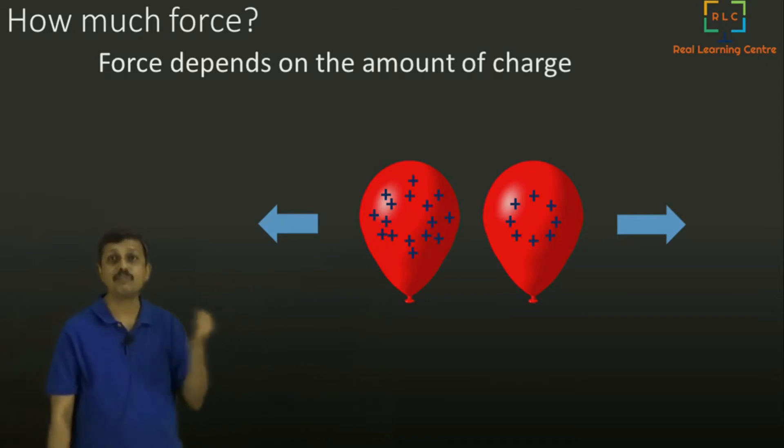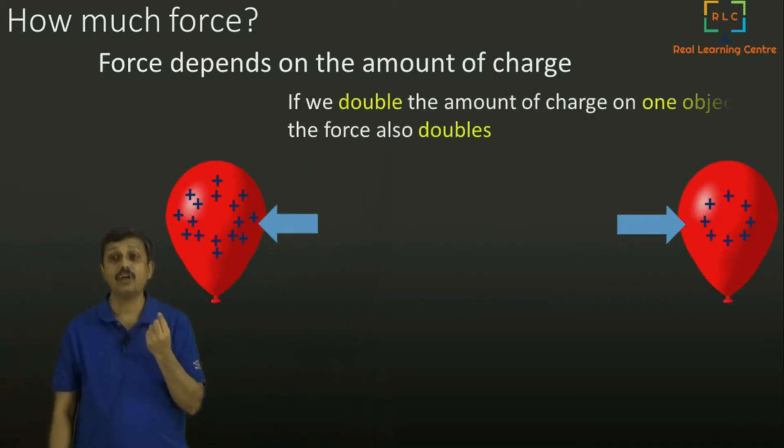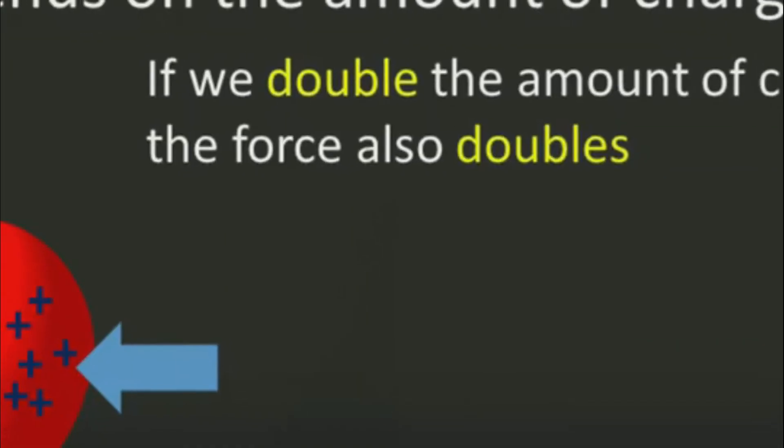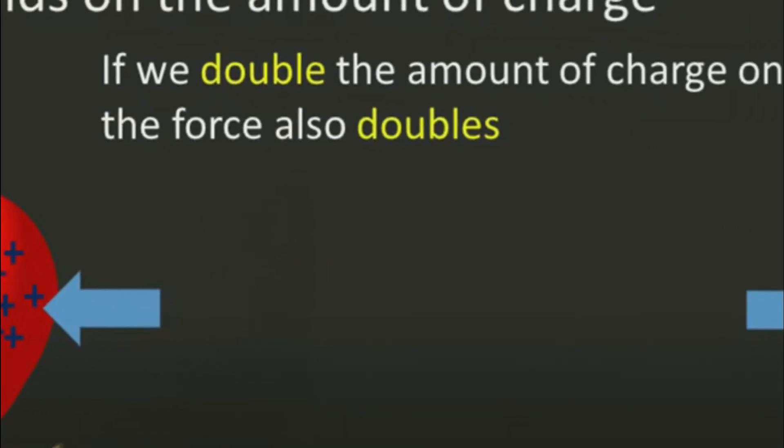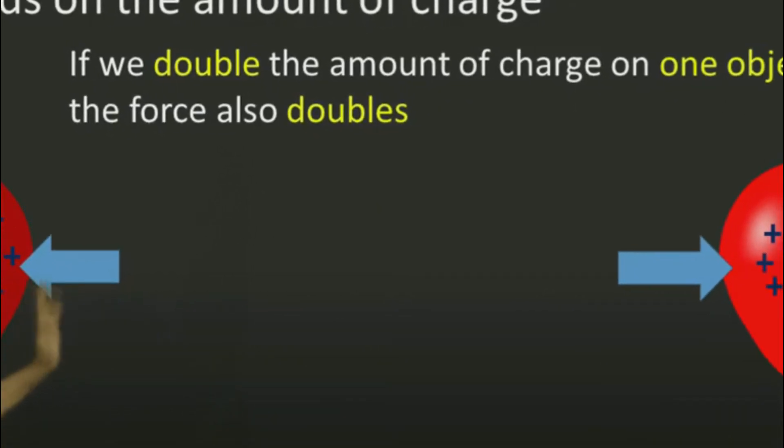You can see those arrows. The force between them doubled, and they are now vigorously pushed away. So if we double the amount of charge on one of them, the force actually doubles.